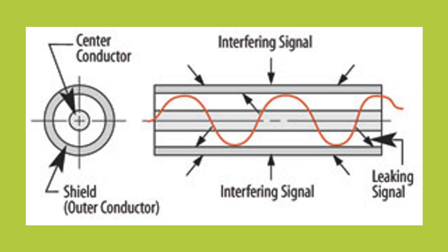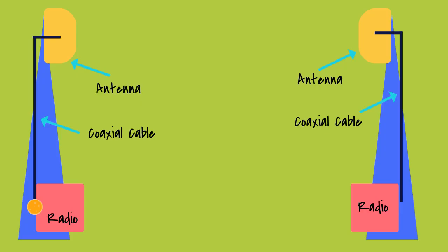The RF signal propagates within the shield. The goal is to keep as much of the signal within the cable and the interfering signals out. As we saw in the first video I did, a radio frequency signal leaves the radio, goes up the coaxial cable where it loses signal, to the antenna which amplifies that signal, over the air where it again loses signal, and into the receiving antenna where the signal is amplified, down the coaxial cable where it again loses signal, and into the receiver of the receiving radio.